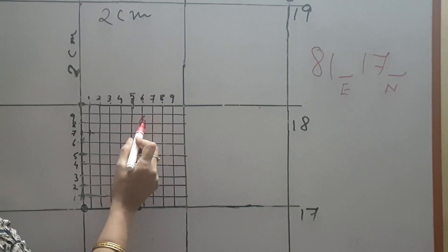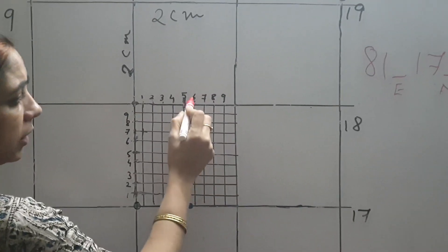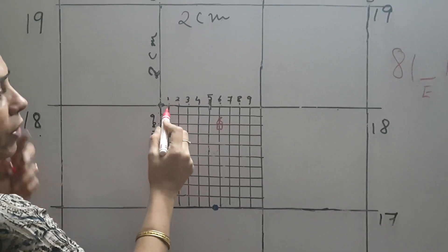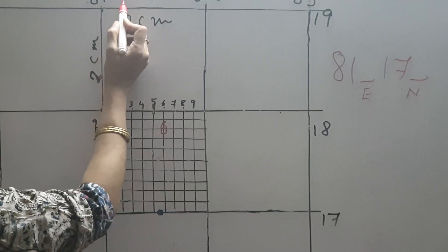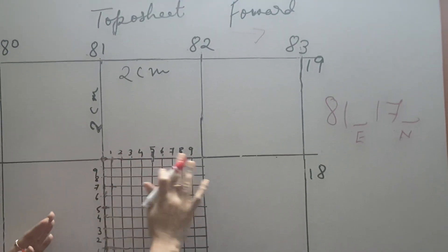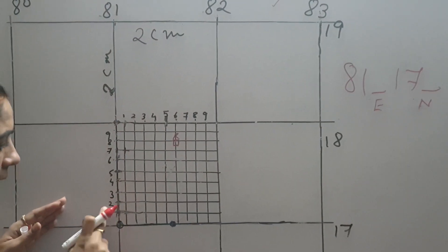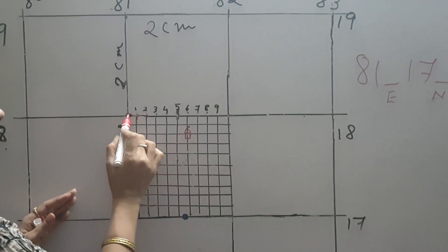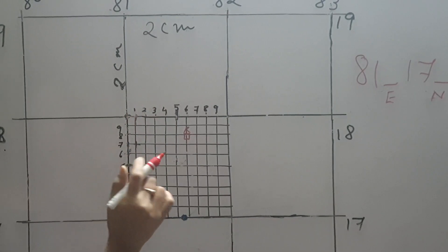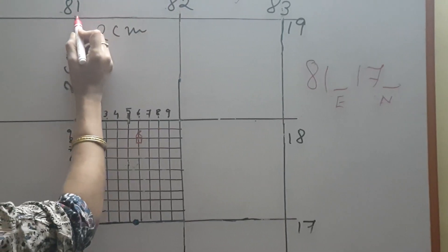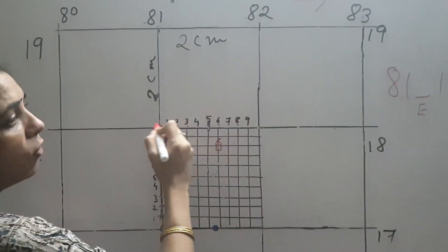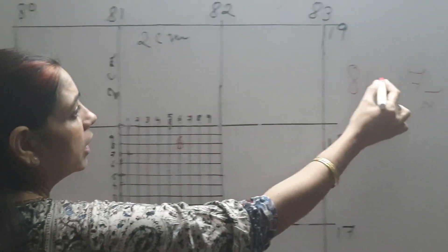This temple lies in between — it is exactly on the 6th division. So we are going to write the easting value which gives you the forward readings. We have divided this grid into 10 equal parts. We have divided this easting line into 10 equal parts and we have divided this northing line into 10 equal parts. Each division is 2 millimeters. So when we move from 81 to 82, the value of the easting increases. This temple is on the 6th division, so the third value is 6.